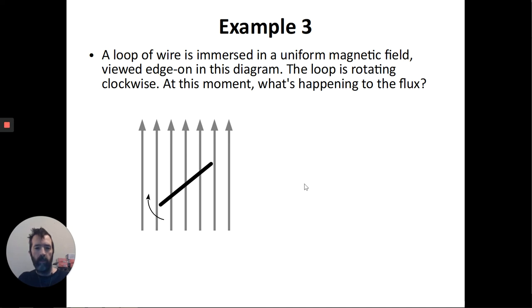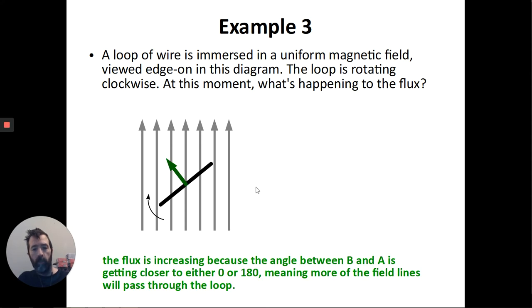So that means that, at this moment at least, the flux is increasing. You can also think about that in terms of the cosine in the formula. Here I've drawn in the area vector. So there's some angle theta between the area vector and the B vector. But based on the way it's rotating, that angle is getting closer to zero. Cosine of zero is one. So the cosine is on its way up towards its maximum value. Means the flux is increasing at this moment.